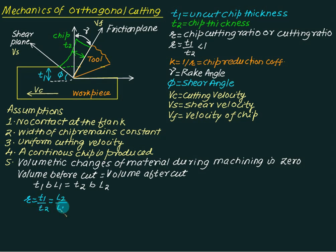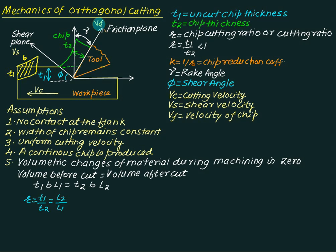We can also use volumetric flow rate. The cross-section perpendicular to vc has dimensions t1 and b (width), so the volumetric flow rate equals t1 multiplied by b multiplied by vc. This must equal the volumetric flow rate for the chip, which has thickness t2, width b, and velocity vf. Therefore t1 by t2 can also be written as vf divided by vc. So r can be calculated in any of these three ways depending upon the data given.